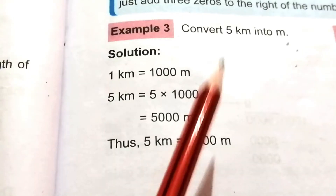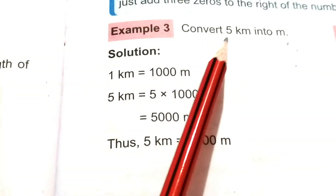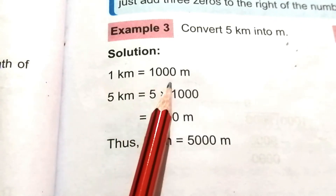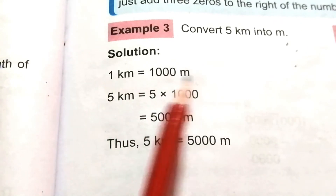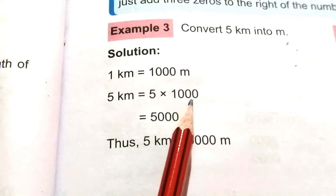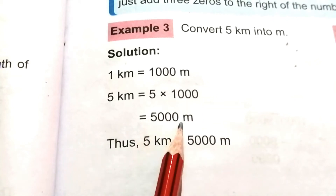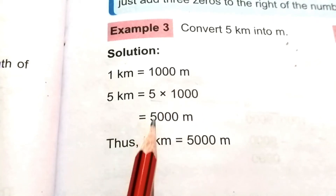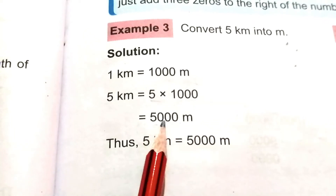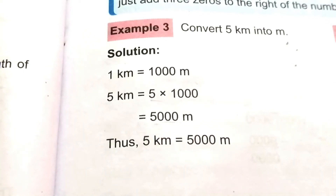Example 3: Convert 5 kilometers into meters. We know 1 kilometer equals 1000 meters, therefore 5 kilometers equals 5 × 1000 = 5000 meters. You write 5 as it is, then add three zeros after it, giving 5000 meters.